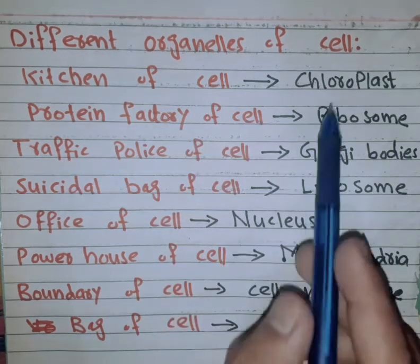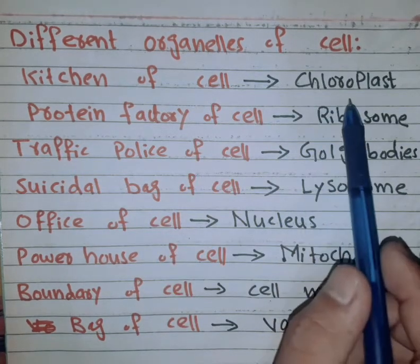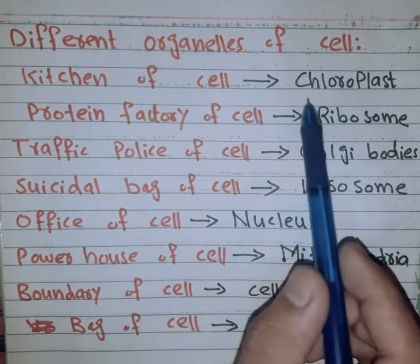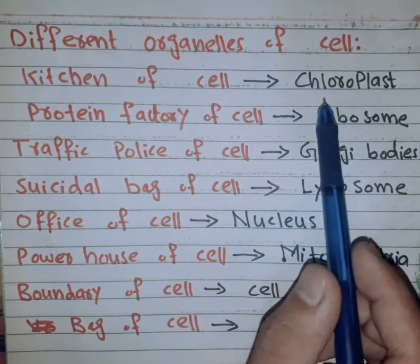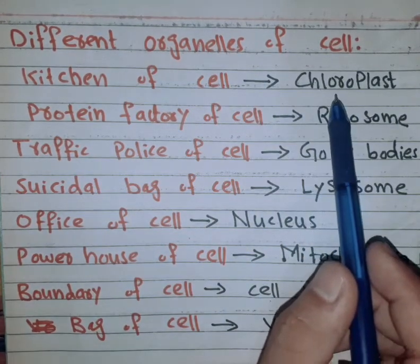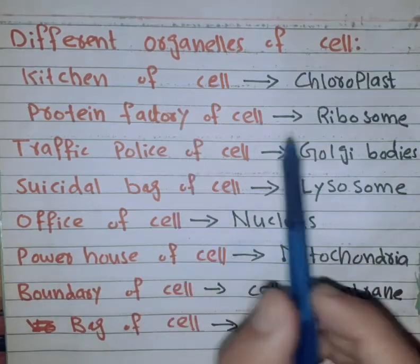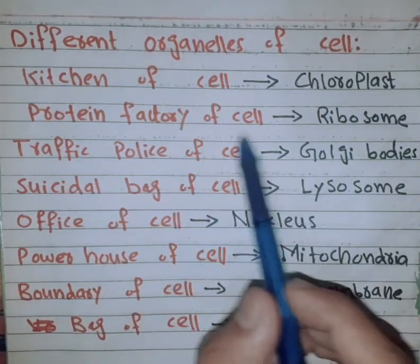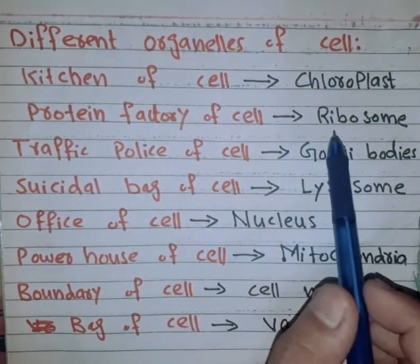In summary, chloroplasts are the kitchen of the cell. The ribosome is the protein factory of the cell.